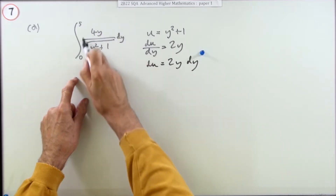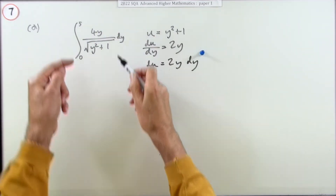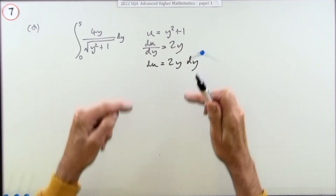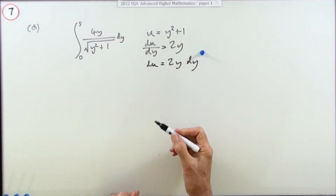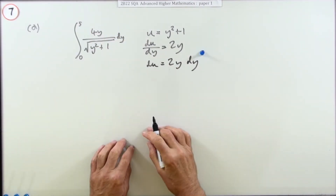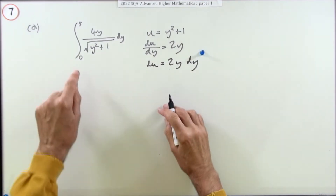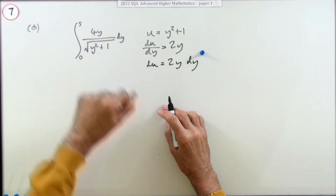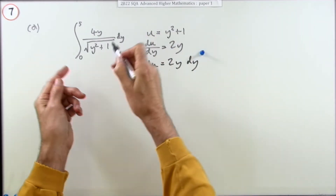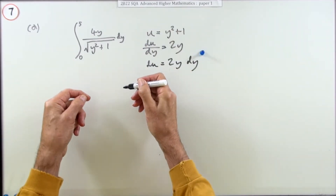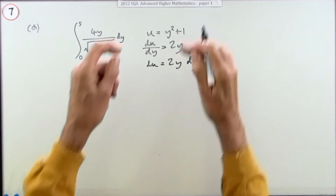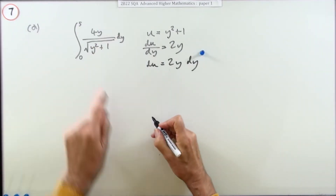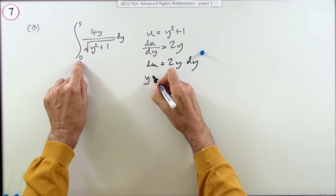You could carry out all substitutions so everything is in u, integrate, get a result, go back to y, and use the limits 0 and 5 to evaluate. That's the long way around — necessary for an indefinite integral, where you'd have to change back to y. But since this is a definite integral, we'll change the limits instead.